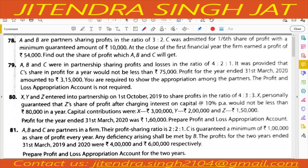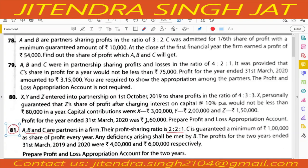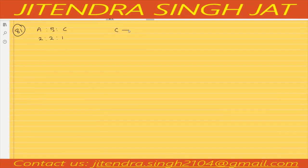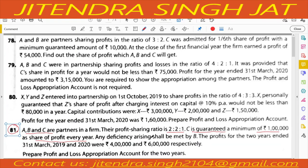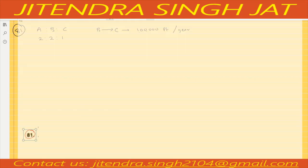Question number 81: A, B, and C are partners in a firm. Their profit sharing ratio is 2 to 2 to 1. C is guaranteed a minimum of rupees one lakh as share of profit every year. Any deficiency arising shall be met by B.